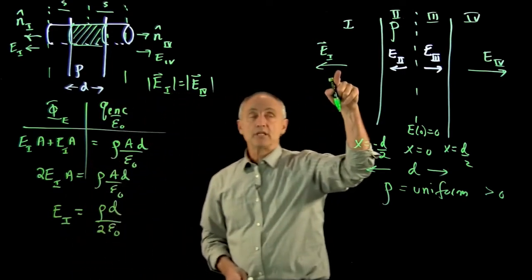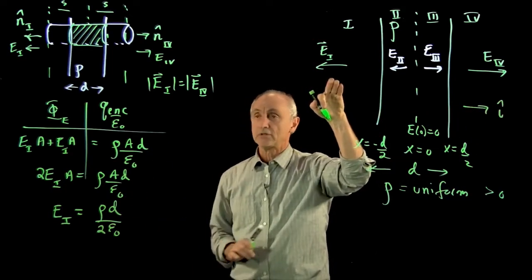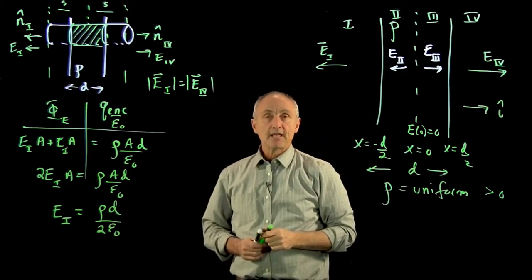Now, remember, it's pointing. Let's call this our positive i hat direction. In region 1, it's in the negative i hat direction. And in region 4, it's in the positive i hat direction.